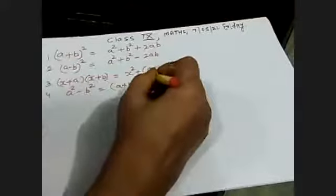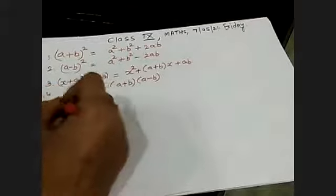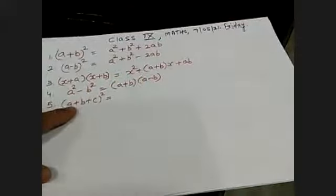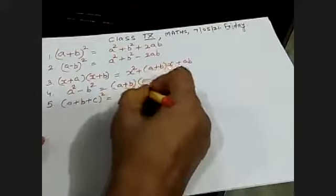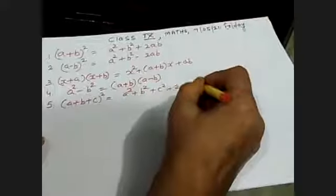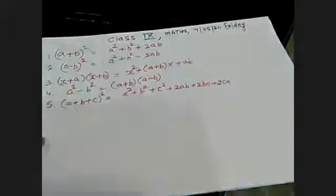In the first bracket it is equal to A plus B, and in the second bracket it is equal to A minus B. And the next identity, when you square the trinomial terms — A plus B plus C whole square — that is equal to A square plus B square plus C square plus 2AB plus 2BC plus 2CA.